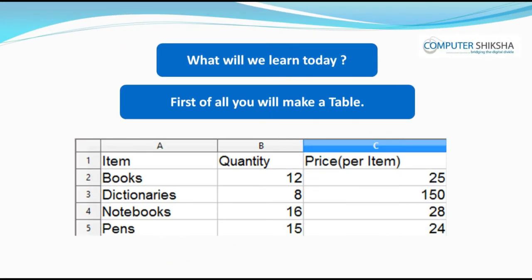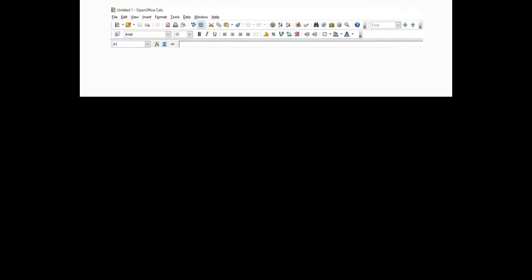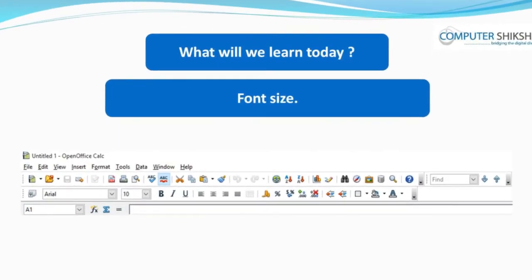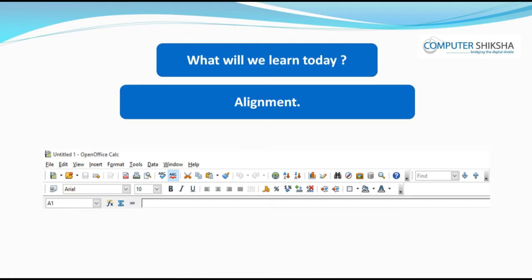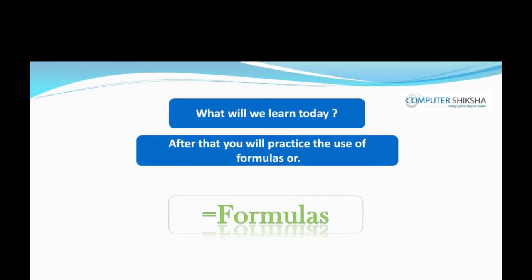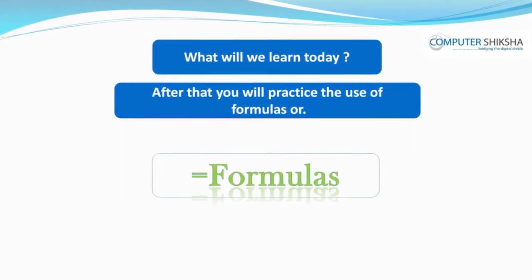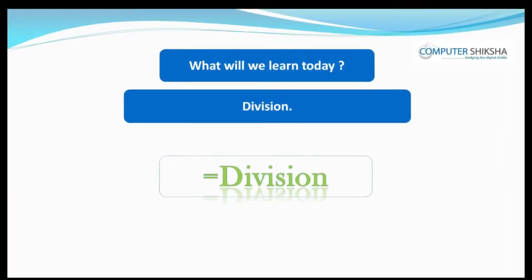First of all, you will make a table. After this, you will learn about some of the options of the formatting toolbar like font name, font size, bold, italic, underline, alignment, number formatting, border, background color, and font color. After that, you will practice the use of formulas for sum, multiply, subtract, and division.